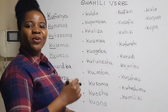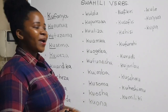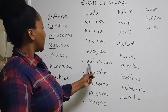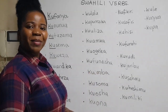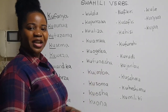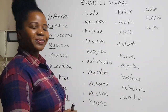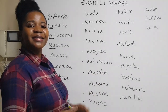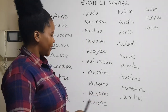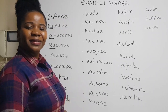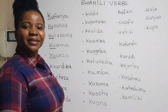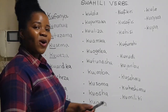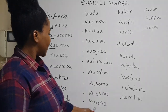'Kuamka' is 'to wake up' and 'amka' is 'wake up.' 'Kuogelea' is 'to swim' and 'ogelea' is 'swim.' 'Kufundisha' means 'to teach' and 'fundisha' means 'teach.' 'Kuimba' is 'to sing' and 'imba' is 'sing.' 'Kusoma' is 'to read' and 'soma' means 'read.'